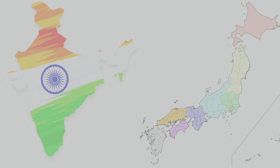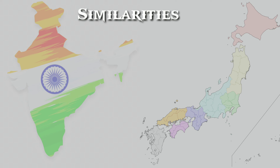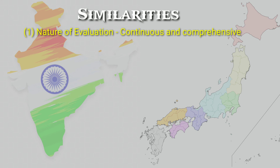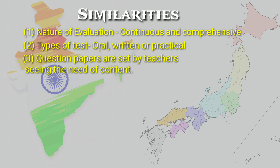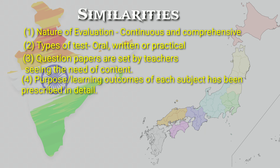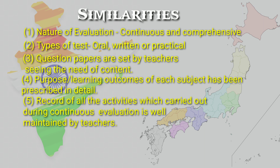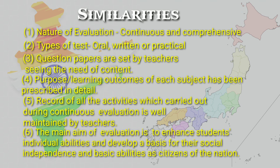Now let us see some similarities in the evaluation systems of Kendra Vidyalai and Kogane Elementary School. First, the nature of evaluation is continuous and comprehensive. Second, types of tests can be oral, written or practical. Third, question papers are set by teachers based on the need of the content. Fourth, the purpose or learning outcomes of each subject are prescribed in detail. Fifth, records of all activities during continuous evaluation are well maintained by teachers. Sixth, the main aim of evaluation is to enhance students' individual abilities and develop a basis for their social independence and basic abilities as citizens.